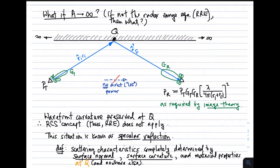If the area does go to infinity — if you can't use the radar range equation — what can you do? Consider the case of an infinite flat perfectly conducting surface. Everything else remains the same: same transmit power, transmit directivity, direction of incidence, distance, R hat sub S, R sub S, and receive directivity. We can compute the received power simply using image theory.